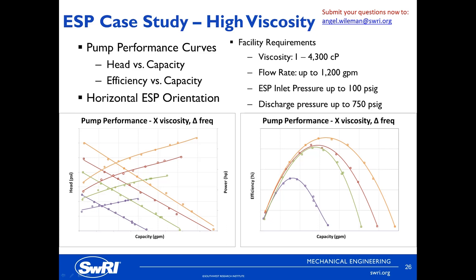For this case study, due to the proprietary nature of the test, the data was presented in non-dimensional form. But for this particular scenario of a fixed viscosity at a changing pump frequency, you can still observe some trends. Each line on these graphics represents a pump speed setting and several flow points at that condition. What can be seen is that the overall head and throughput produced by the pump drops off significantly with decreasing pump speed at a particular viscosity condition. A similar decrease in pump efficiency is seen as well.